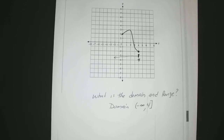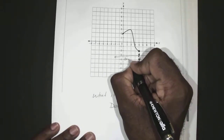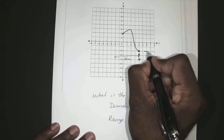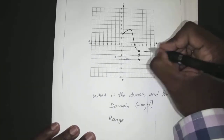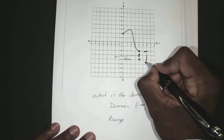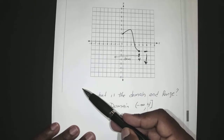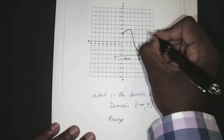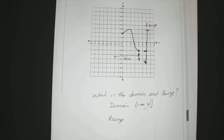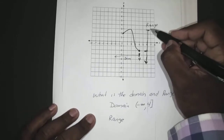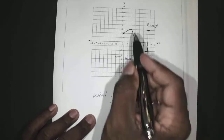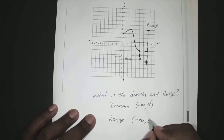Now we do the same thing for our range, but we do it going up and down. For your range, the lowest part is here at 2. Actually, the arrow goes all the way down, so the lowest part is actually negative infinity — this down arrow will keep going down forever. And the highest part of it is 3. So your range is from negative infinity to 3. Since 3 is included and it's not an open circle, you use the bracket.